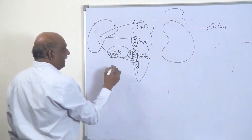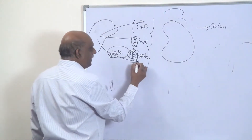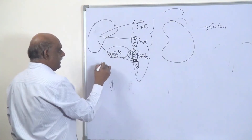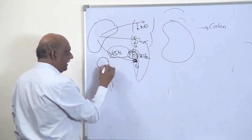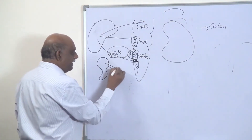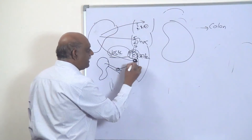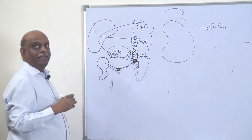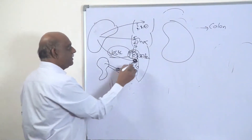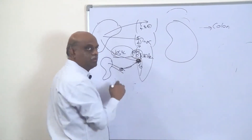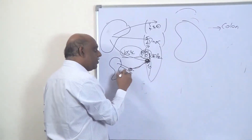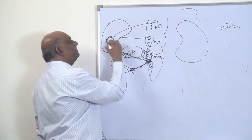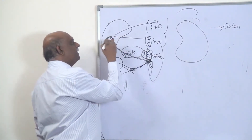The vestibular nuclei, receiving all signals from the inner ear via the vestibular nerve, will send all this information through the inferior cerebellar peduncle up to the cerebellum.